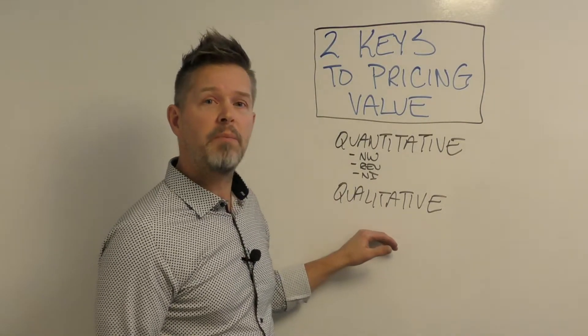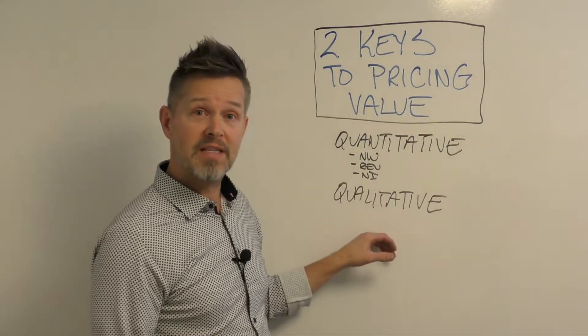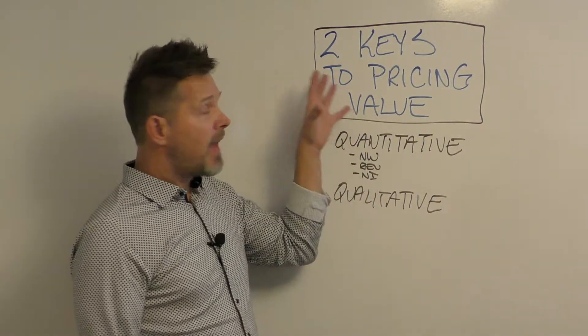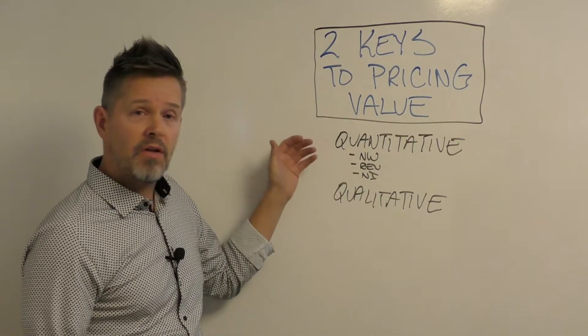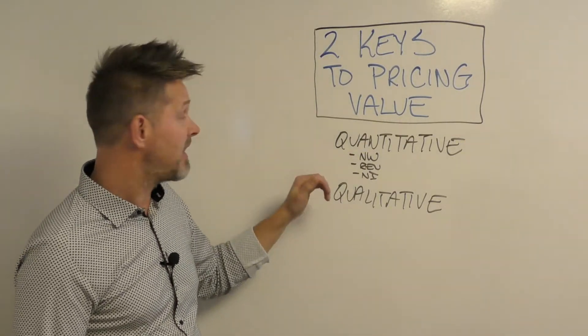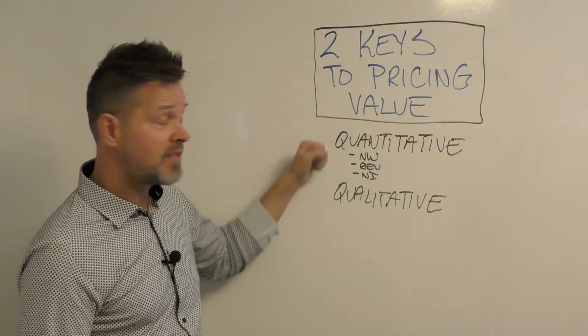The one client that means so much more than the other ones, well they're going to be willing to pay more for the price, more for the transaction than the other person would. So when you're going in and you're trying to decide on the value pricing and the pricing, you have to take into account these two specific keys. One is the quantitative analysis and the other one is a qualitative analysis.